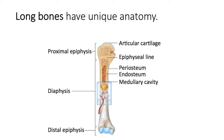At the end of all long bones you have articular cartilage, which is composed of hyaline cartilage. Hyaline cartilage is a smooth, glassy type of cartilage — not a lot of thick fibers — and it provides a smooth surface so that joints can move freely. When we talk about joints, we'll discuss freely moving synovial joints.